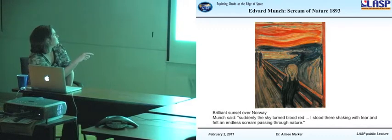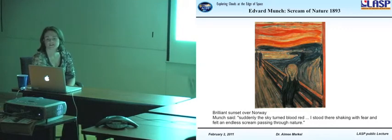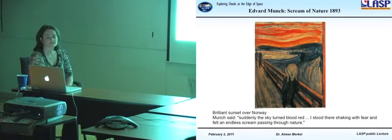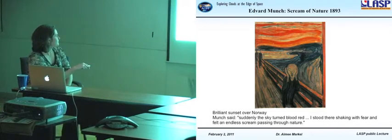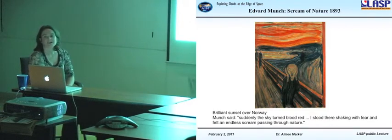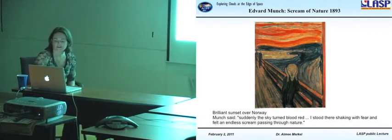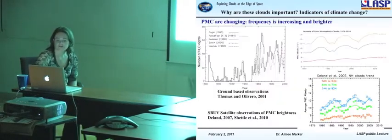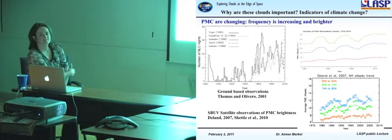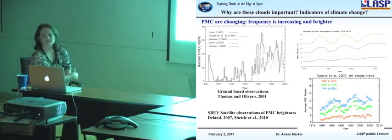What was special about Krakatoa versus other volcanic eruptions, we do think other volcanic eruptions provide nucleation sources for NLCs to form. But what was special about Krakatoa is it's in the middle of the ocean. And so there was a huge amount of water vapor that went up into the atmosphere. And the thought is that that was the trigger to actually get enough water in the mesosphere to start forming these clouds. So because of this eruption, Edvard Munch actually has this famous painting, The Scream of Nature, that he did in 1893. And this is a depiction of the brilliant sunset over Norway. And Munch said that suddenly the sky turned blood red. I stood there shaking with fear. It felt an endless scream passing through nature. And this is all from the Krakatoa eruption, these brilliant sunsets that nobody knew what was going on.